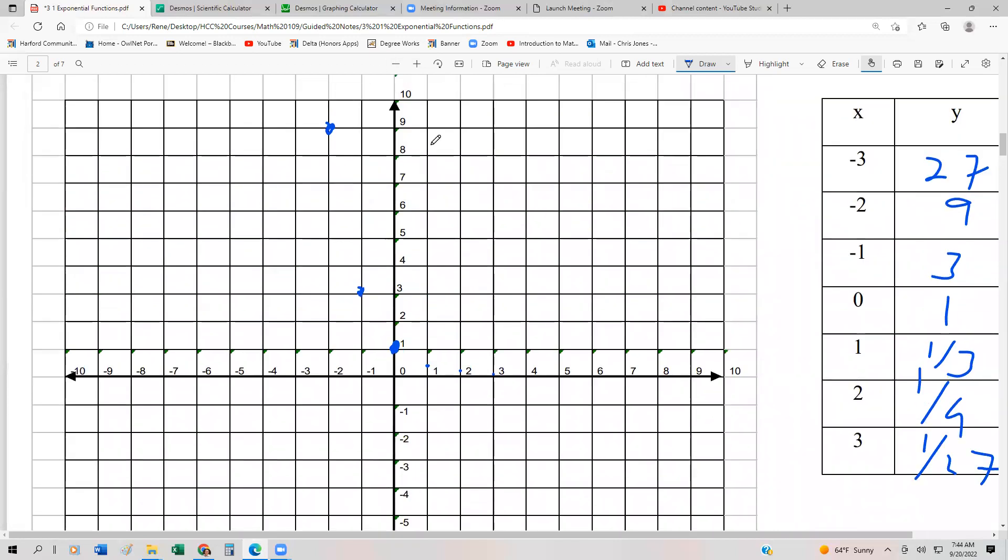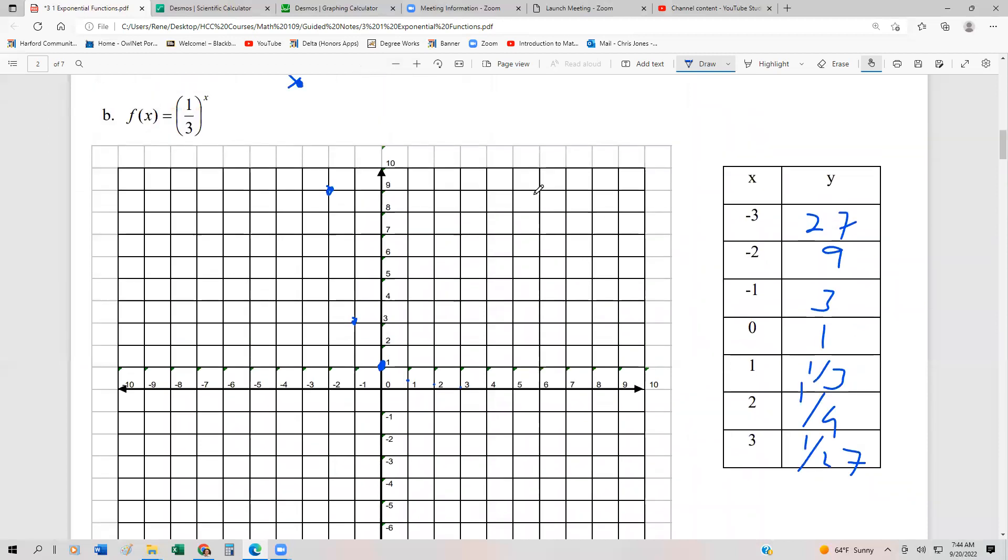And so those are our coordinates. Let's go ahead and graph these by playing connected dots. And so if I do so, I'm going to do my best to make sure that this is almost on the axis. So it's running parallel to the axis almost, and then it's going to go up exponentially. So that's about what our graph looks like.